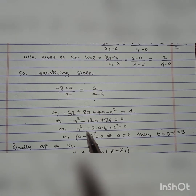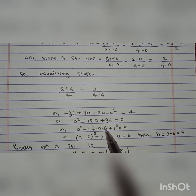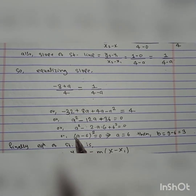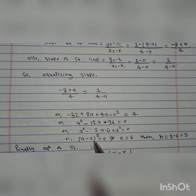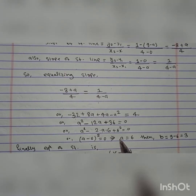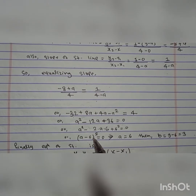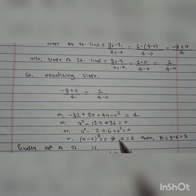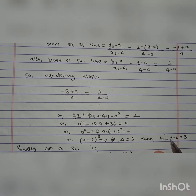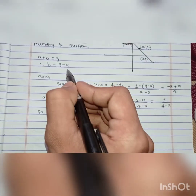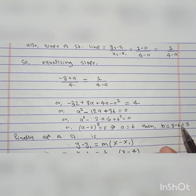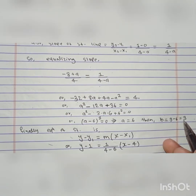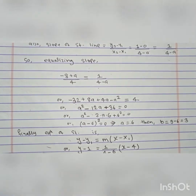Arranging a² - 12a + 36 into the (a - b)² form, this factors as (a - 6)² = 0, giving a = 6. Since b = 9 - a, we get b = 9 - 6 = 3. Now that we have the values of a and b, we can find the equation of the straight line.